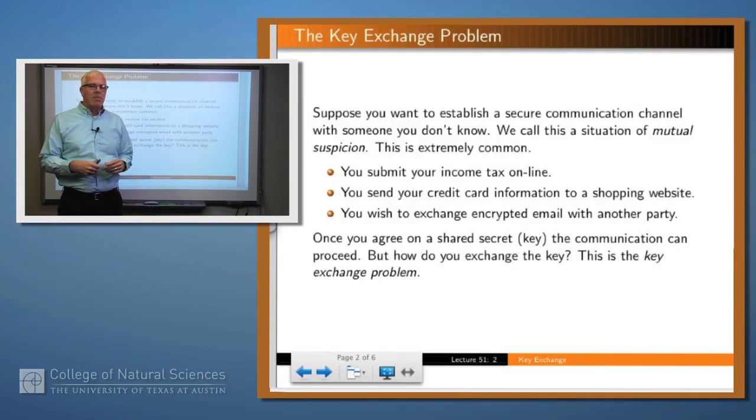This happens all the time. It's what we call a scenario of mutual suspicion. It happens, for example, every time that you go onto a new website to buy something, buy a widget, or every time you want to send your credit card online. How do you know that you're actually dealing with somebody over a secure channel? You can't unless you have some sort of a key to encrypt the information. This is called the key exchange problem.